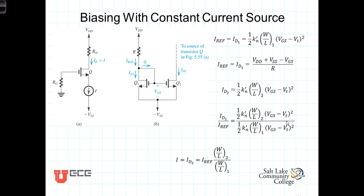A third method of biasing a transistor involves placing a constant current source in the source branch of the transistor circuit, as shown here.